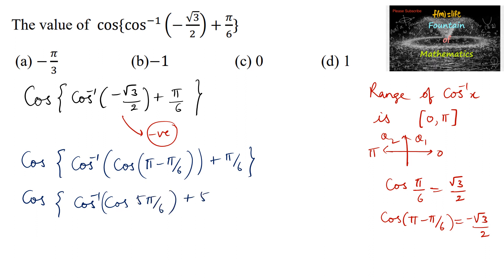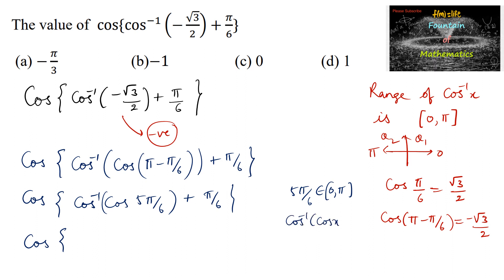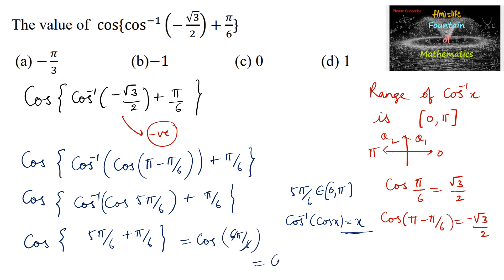Hence we write cos⁻¹(cos(π − π/6)) + π/6. Since π − π/6 = 5π/6 belongs to the range [0, π], we apply cos⁻¹(cos x) = x to get 5π/6 + π/6 = 6π/6 = π. The value of cos π is −1, so the answer is −1.